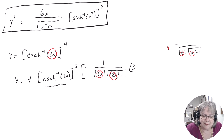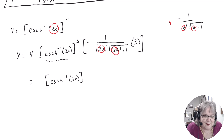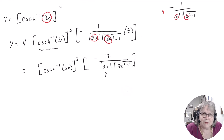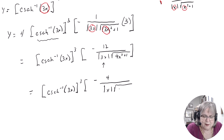Then you loop back in and take the derivative of the inside, 3x, which gives you 3. So what you have is the inverse hyperbolic cosecant of 3x cubed, times negative 12 over the absolute value of 3x times the square root of 9x² plus 1. Since the absolute value of 3 is 3, you can factor that out and cancel it, leaving the absolute value of x in the denominator.